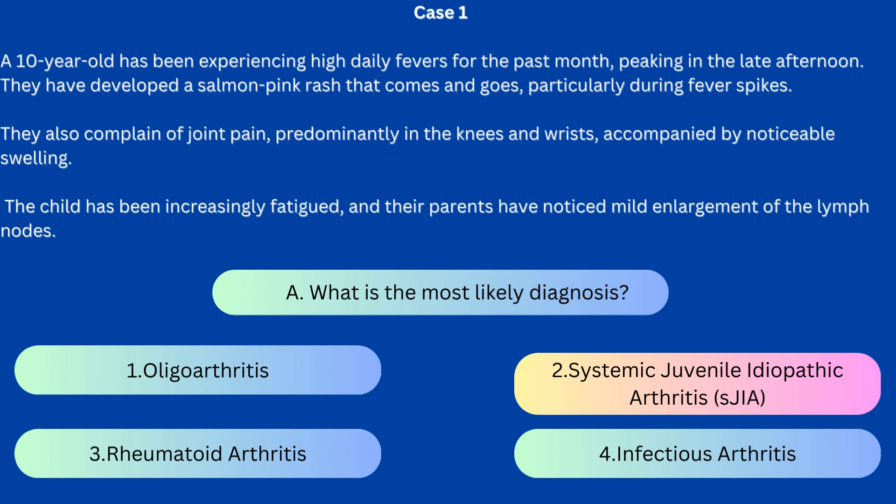Also, systemic features like lymphadenopathy are present. It is called systemic because the patient often presents with significant systemic symptoms such as fever, rash, and arthritis. It is driven by a widespread inflammatory response affecting multiple organ systems.